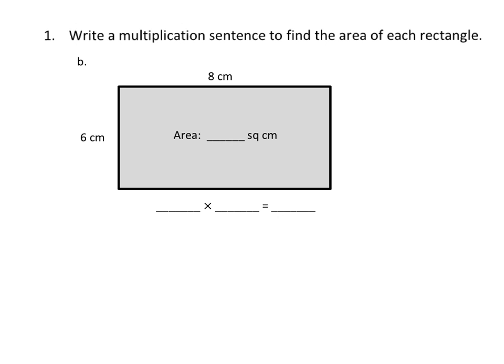So in this problem, it says write a multiplication sentence to find the area of each rectangle. In this rectangle, we are told that there are 6 tiles, 6 squares going up and down, and 8 squares or 8 tiles going left and right.